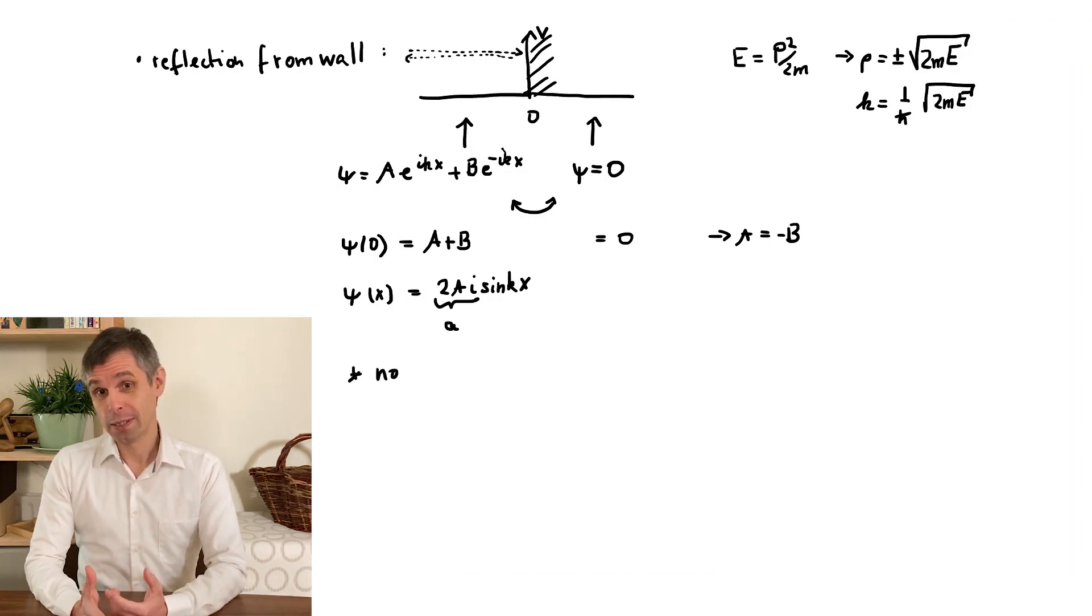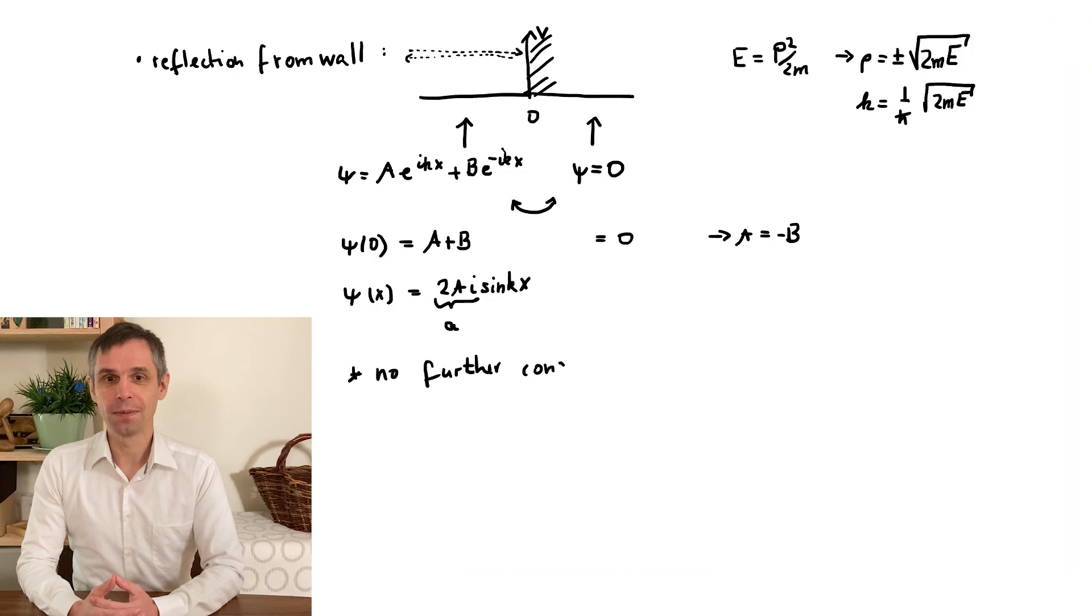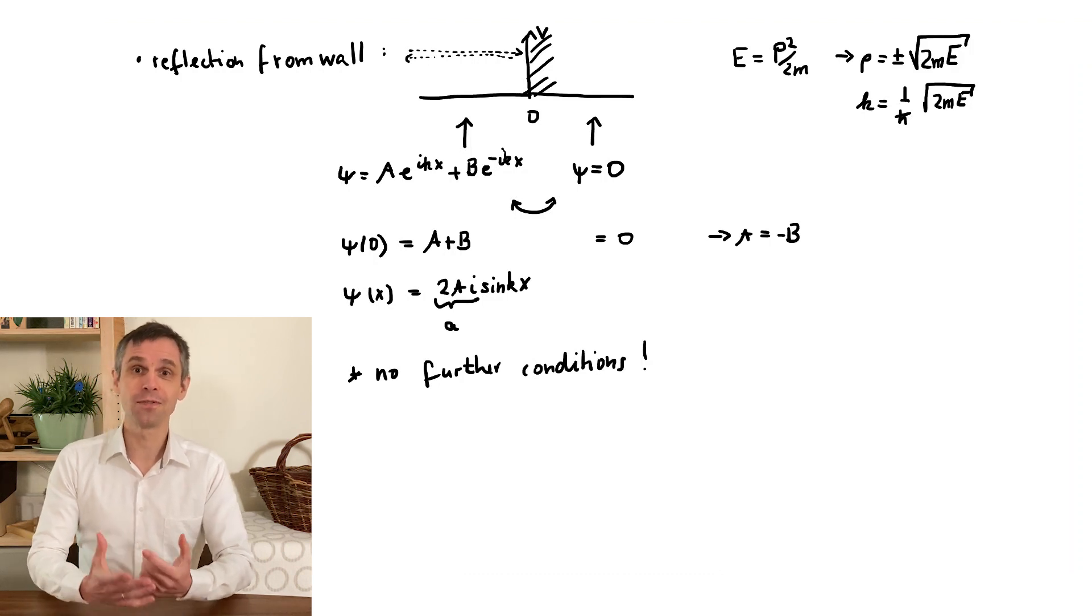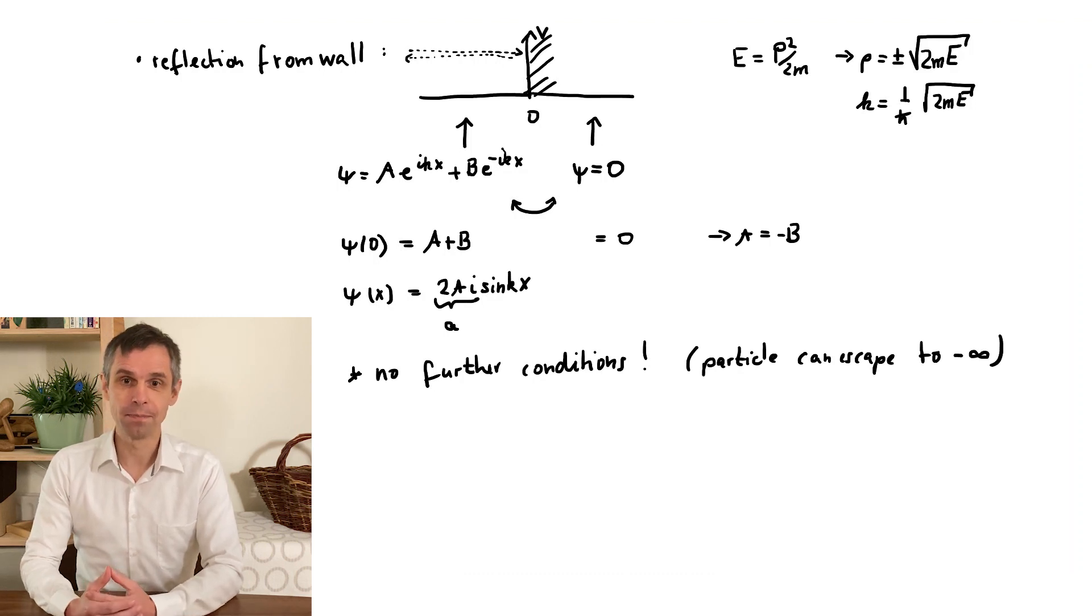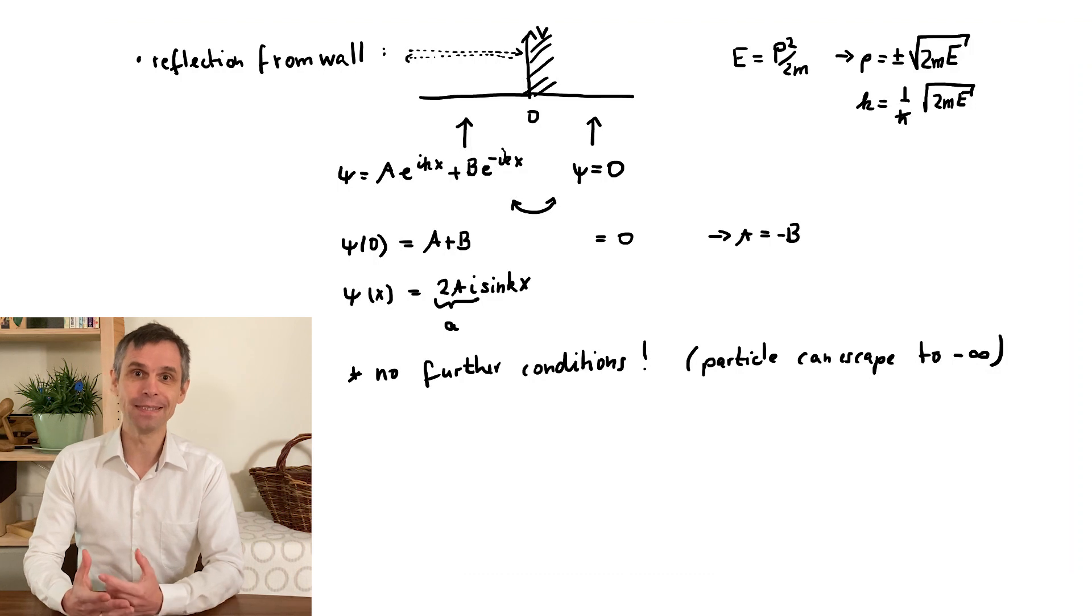But now we do not have a second boundary condition, the particle is free to be arbitrarily far to the left. And as it happens, because this region is infinitely long, the magnitude of the momentum is now well defined, without any uncertainty, only the sign will remain undetermined.